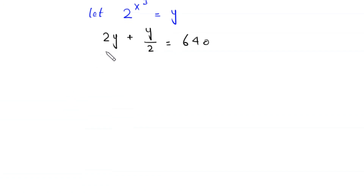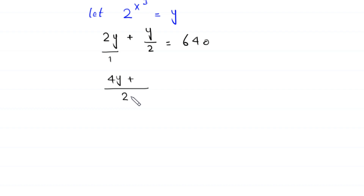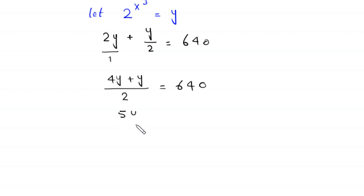We take the LCM of 1 and 2, which is 2. Multiplying through: 2 divided by 1 is 2, times 2y gives 4y, plus 2 divided by 2 is 1, times y gives y. So we have 4y plus y, all divided by 2, is equal to 640.